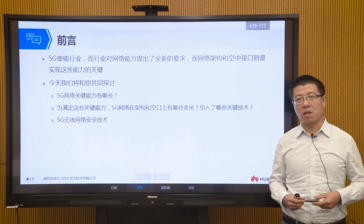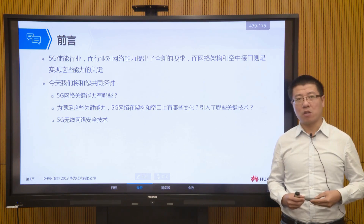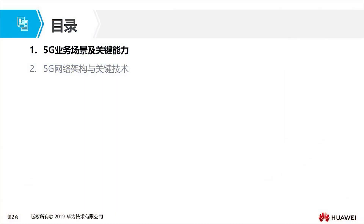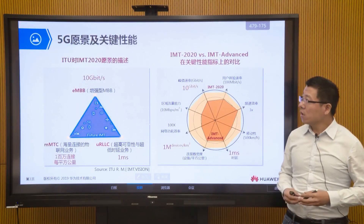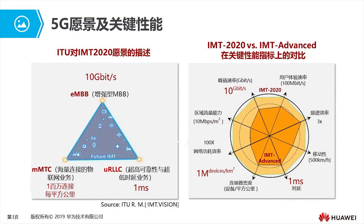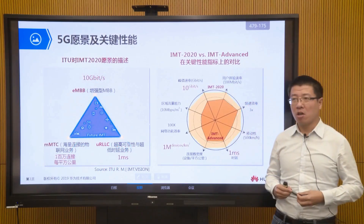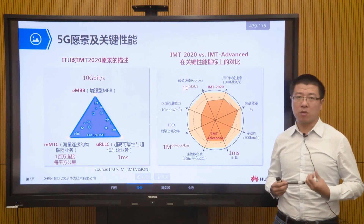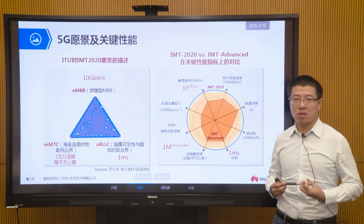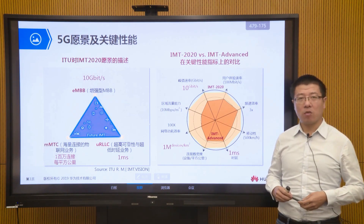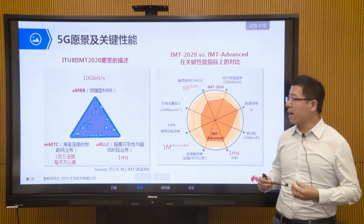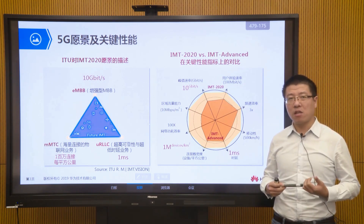The first topic is the 5G vision. The official name of 5G is IMT-2020, defined by the ITU. ITU defines three application scenarios: eMBB, URLLC, and mMTC. In 3GPP R15 and R16 protocols, we mainly define technical standards for eMBB and URLLC. For mMTC, considering continuity with the previous NB-IoT and eMTC, its technical standards will be implemented in 3GPP R17 and later.